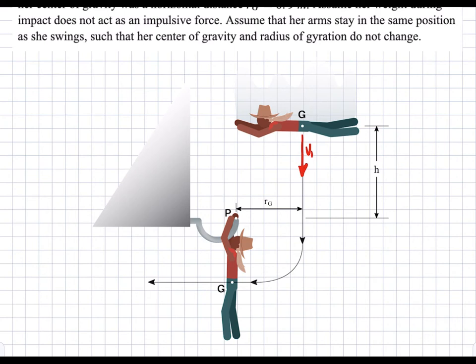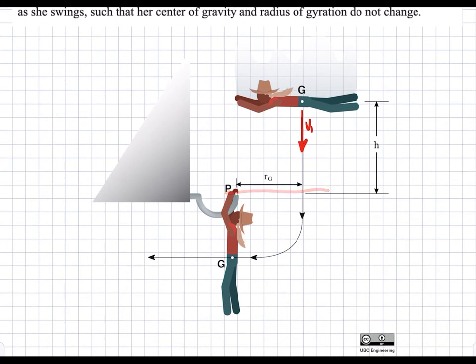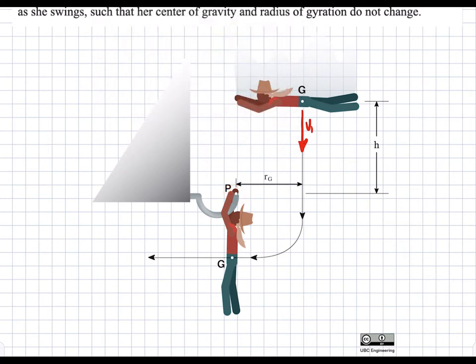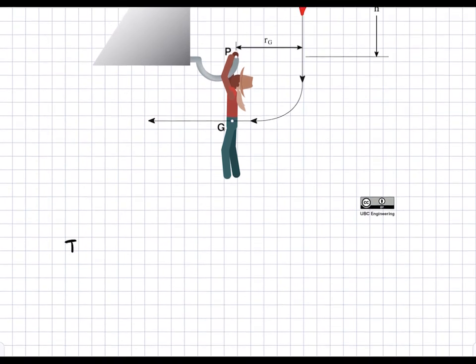After the impact, we have conservation of angular momentum. Then we can use work-energy again to determine the velocity at the new position after the 90 degree rotation when the person ends up fully vertical. Let's first calculate the velocity when the person becomes horizontal just before connecting to the hook. Conservation of energy says that potential and kinetic energy at state 1 equals kinetic and potential energy at state 2.